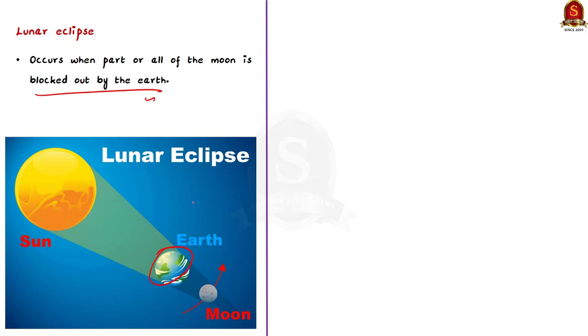As we saw earlier, during solar eclipse, the moon is blocking light from the sun to earth. And during lunar eclipse, the earth blocks the light from the sun from reaching the moon.